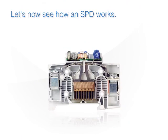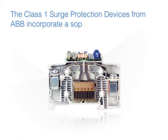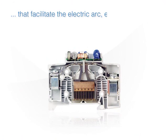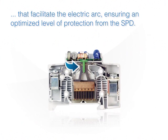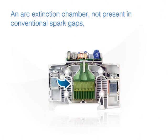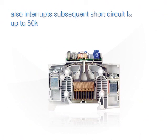Let's now see how an SPD works. The Class 1 surge protection devices from ABB incorporate a sophisticated electronic control system that facilitates the electric arc, ensuring an optimized level of protection from the SPD. An arc extinction chamber, not present in conventional spark gaps, also interrupts subsequent short-circuit follow current up to 50 kA.